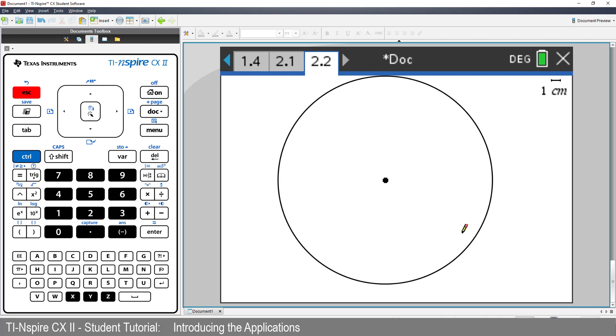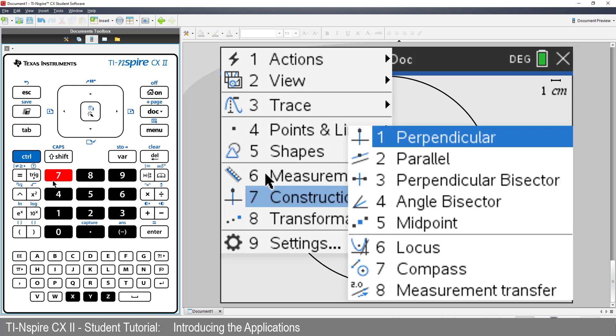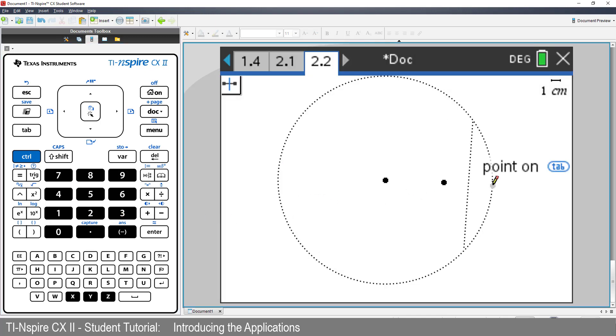I want to draw a point. I could go back to the menu, however there are loads of shortcuts on Transpire. So just press P. Now place the point inside the circle. Now we'll create a perpendicular bisector. Press Menu, select Construction, followed by Perpendicular Bisector. Click on point A, then click a point on the circle. And press Escape to release the Perpendicular Bisector tool.